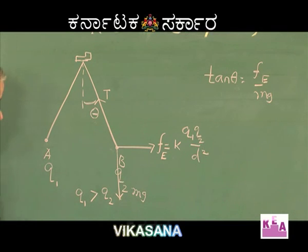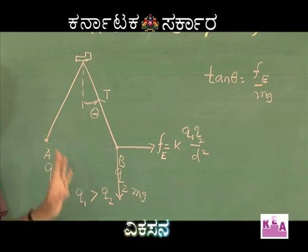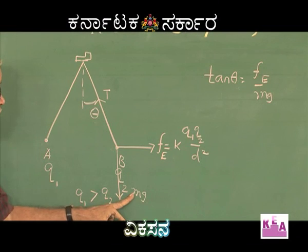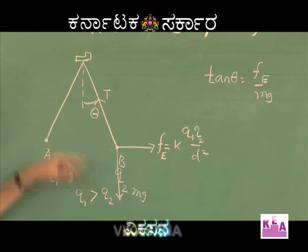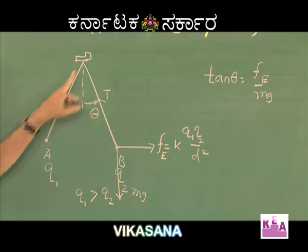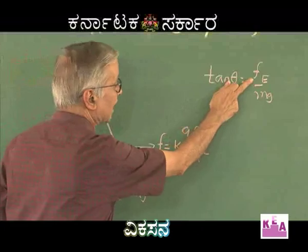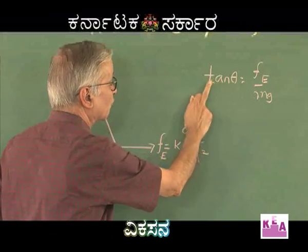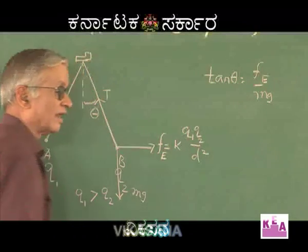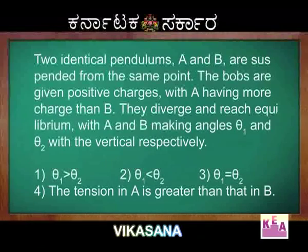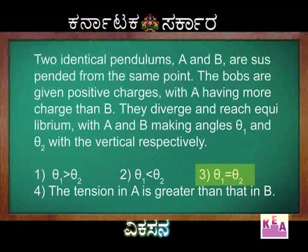Since the pendulums are identical, Mg is also the same. Therefore, for both pendulum A and pendulum B, Fe is the same and Mg is the same. Therefore, tan θ is the same — in other words, θ1 is equal to θ2. Therefore, the third option is correct.